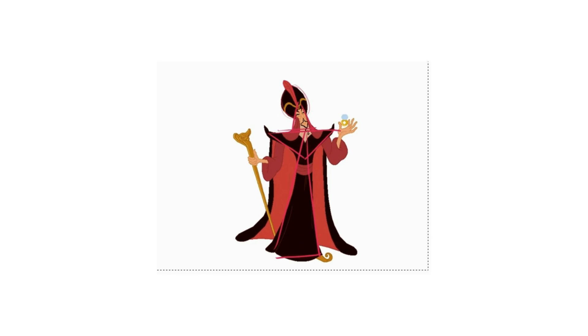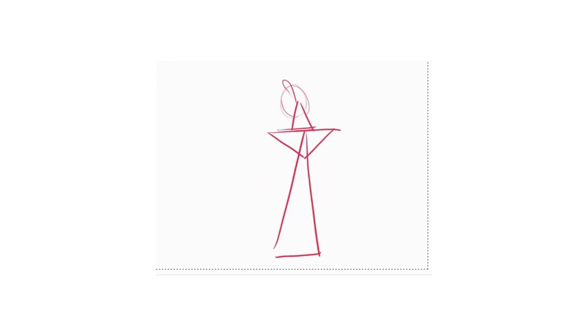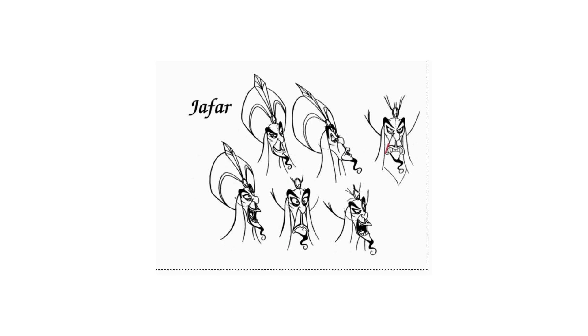Jafar is a villainous character endlessly broken down into triangles. You have to remember that none of this is incidental or accidental — this stuff is very intentional and very well thought out.